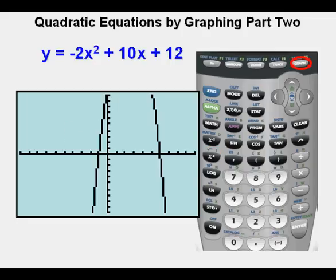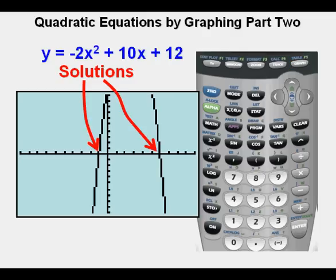Next, he graphs by pressing graph or zoom 6. It looks like the solutions or x-intercepts are at or near x equals negative 1 and x equals 6. Each of the tick marks on the x-axis in the standard window represent one unit.